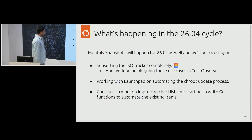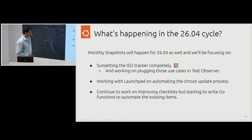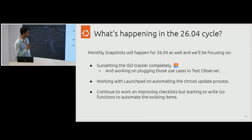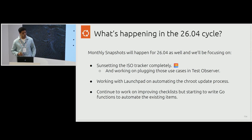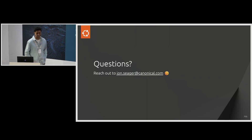For the next cycle, we're sunsetting the ISO tracker. We're still experimenting with different things — we're going to plug in those use cases and test jobs. We're working with Launchpad to automate a few things, continuously improving the checklist, and we're going to start writing goal functions and put them in Temporal to see how it works out. All in all, we're working very hard to make the release process much smoother, much better, and much more reliable. And while we do that, we might kill some tools we were using and change the way we do things. If that causes problems and you have any questions, reach out to John Seeger — because he's the one, not me.